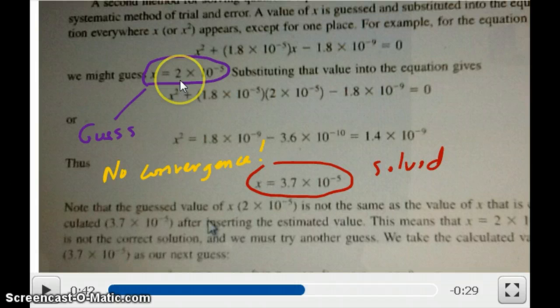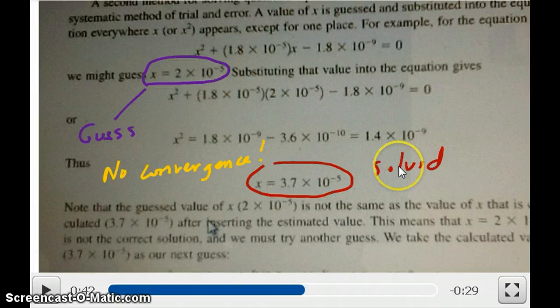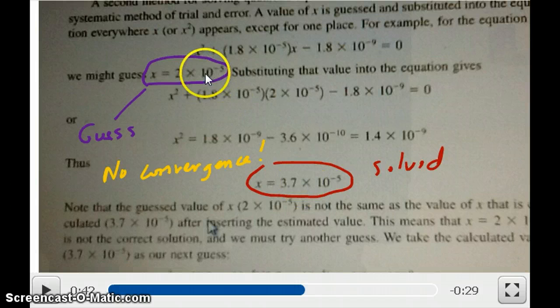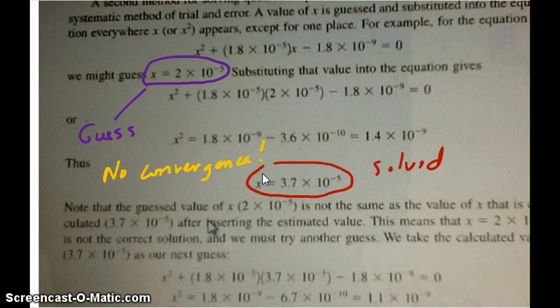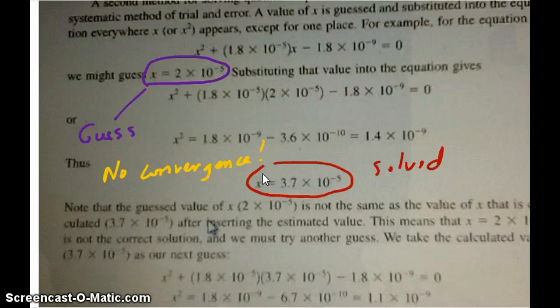So in other words, your purple is your guess value, your red is your solve value. You can see that the two numbers are not the same. One is 2, the other one is 3.7 times 10 to the minus 5, so we don't have convergence in this case. So we need to repeat the successive approximation with a second step.